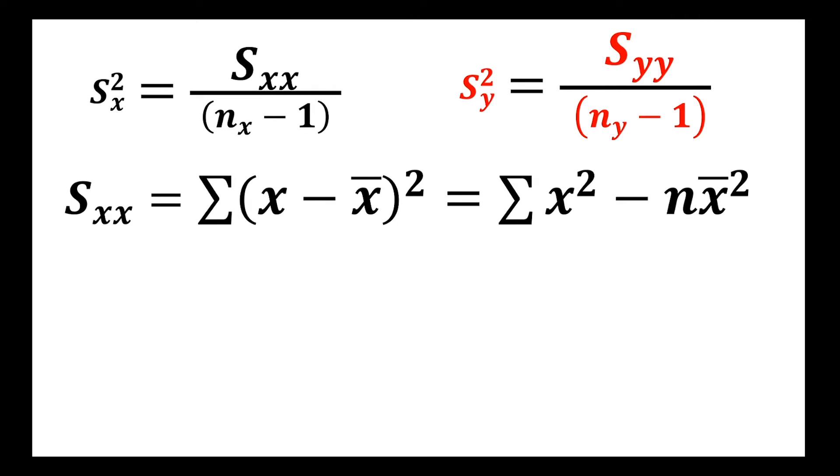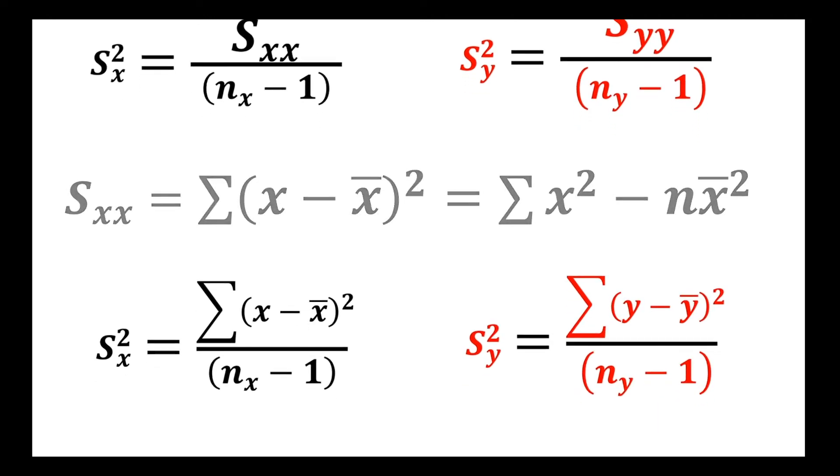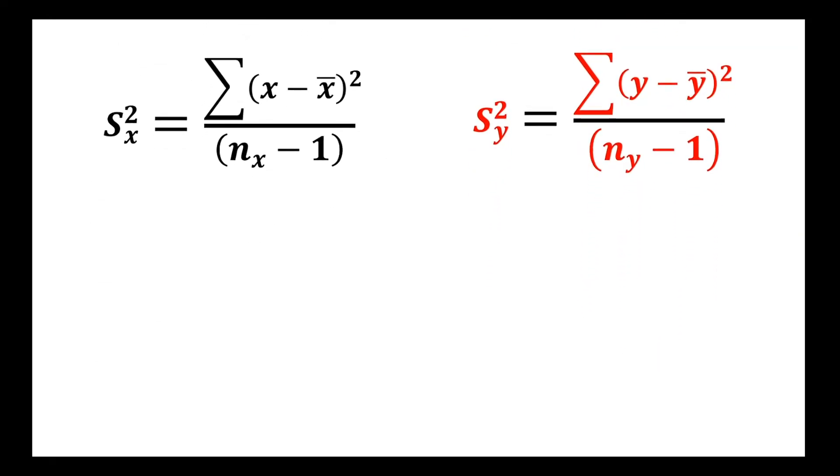Let's go ahead and write that into the fraction for s squared. Building on the fact or the assumption that the two unknown variances are equal to each other, we can find an estimate for that standard deviation. We know that when estimating a statistic, the larger the value of n the better our estimate, so we can actually merge these together. We can combine them, we can pool these estimates of the variance.